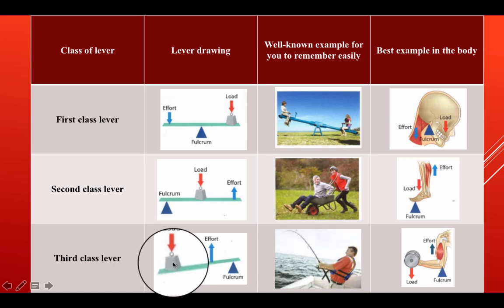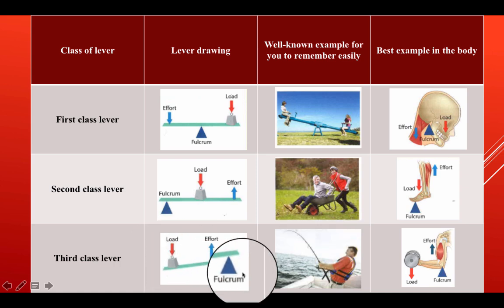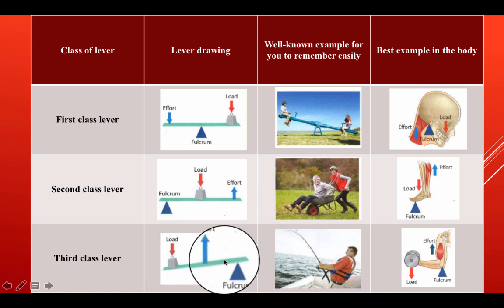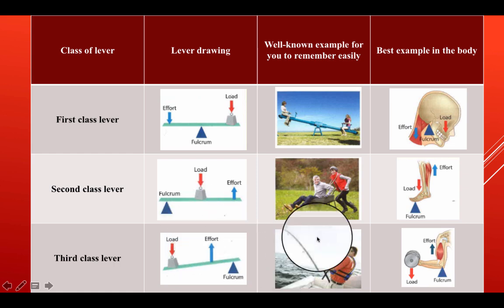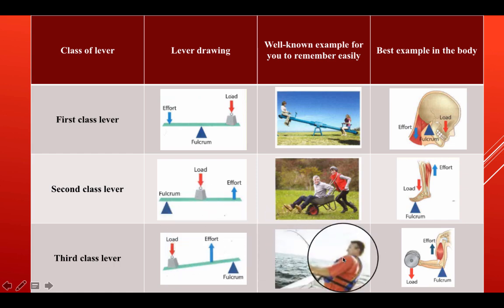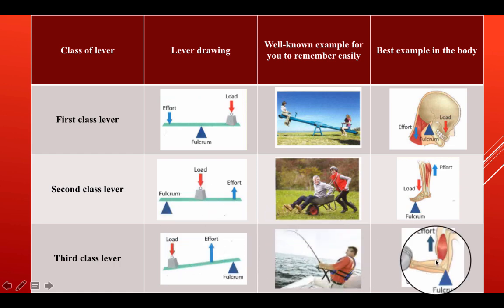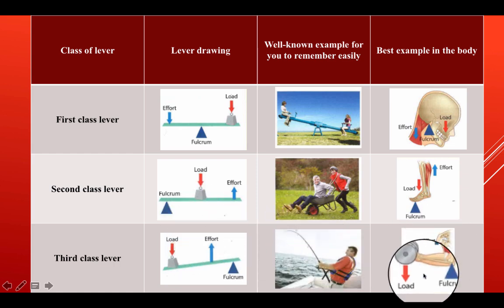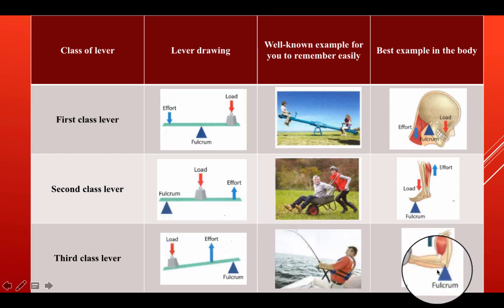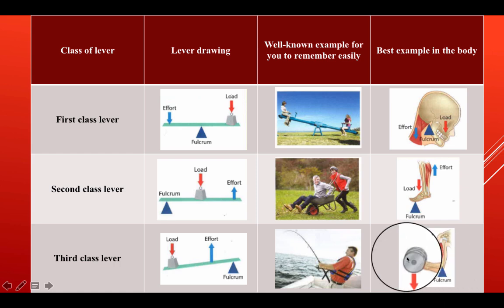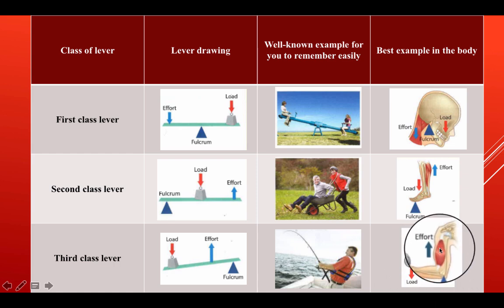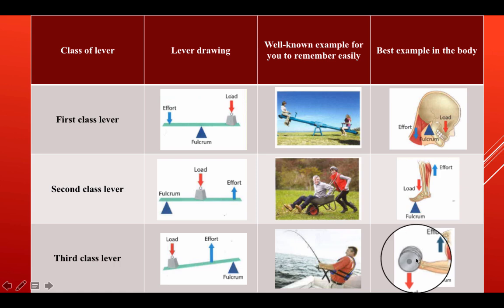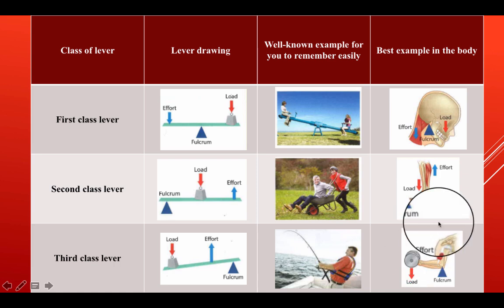Third class lever: the load and the fulcrum are at complete opposite ends and the effort is in the middle. A well-known example is a fishing rod. An example in your body would be a bicep curl — the fulcrum would be the elbow, the load would be the weight, and the effort would be the bicep contracting, moving the weight upwards.